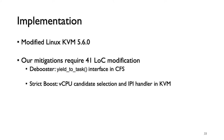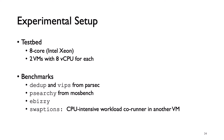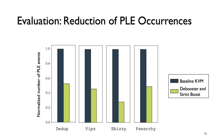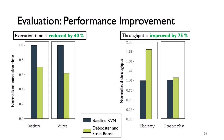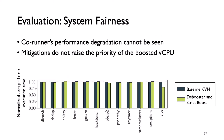I have implemented these two mitigations in Linux KVM 5.6.0 by adding only 41 lines of code modification. The mitigations have been evaluated on an 8-core server with two VMs with 8 vCPUs each. Mitigations can reduce the number of PLE events across four benchmarks. In terms of performance improvement, application execution time is reduced by up to 40% and throughput is improved by up to 75%. I also evaluated fairness between VMs, and results show no co-runner performance degradation, because the mitigations do not raise the priority of the boosted vCPU.